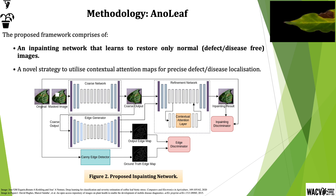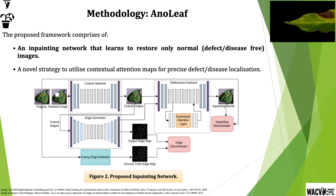The network, when utilized on diseased leaf images, results in the reconstruction of only their healthy counterparts. Based on this reconstructed image, a widely adopted strategy is to compute its difference with the input diseased image using metrics such as Euclidean distance.